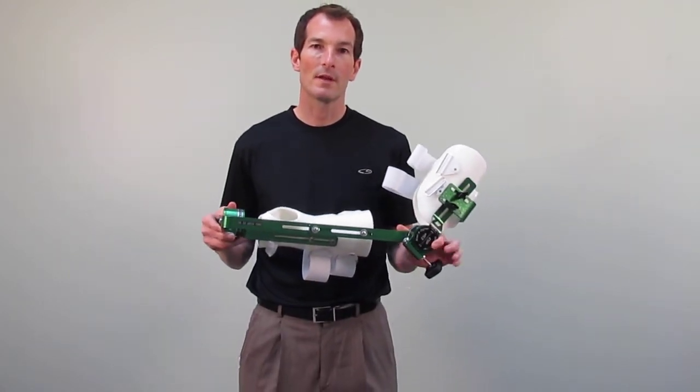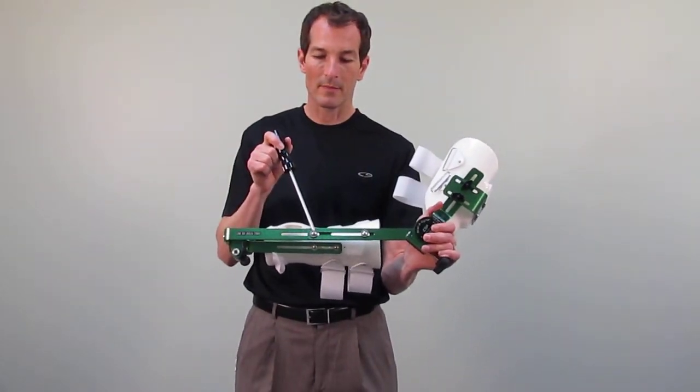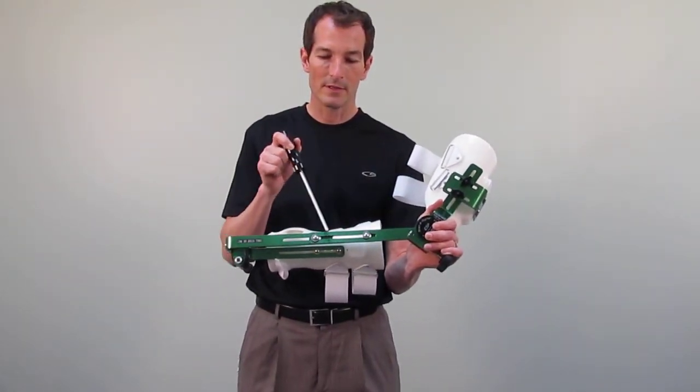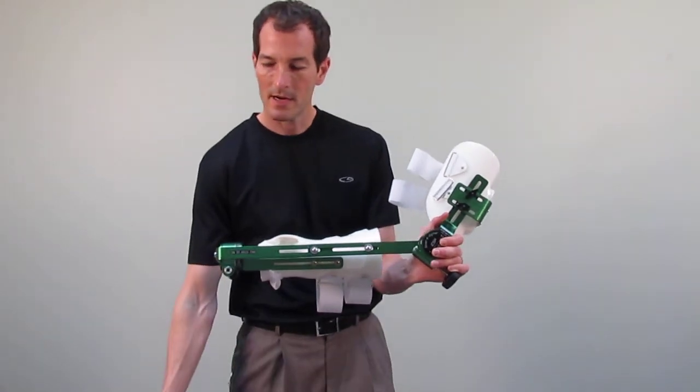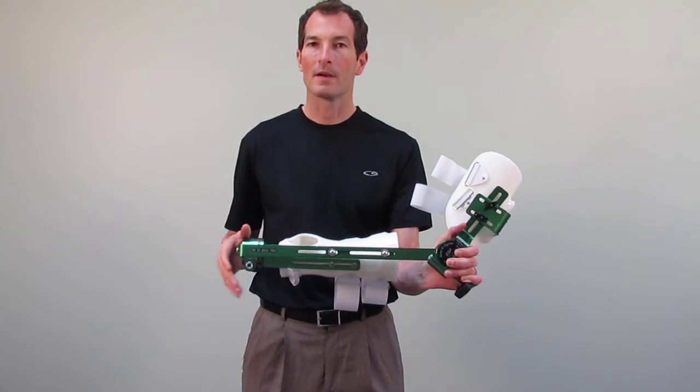First thing that we want to take a look at is to make sure that our forearm cuff fits appropriately from a lever arm standpoint. We can loosen these two Phillips head screws, and this will allow the device to basically retract as well as telescope in a longitudinal fashion.